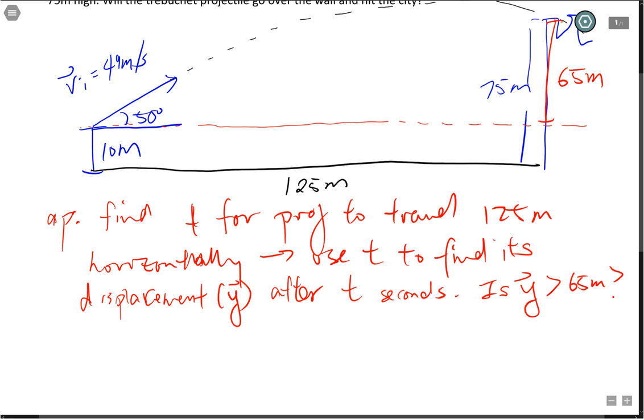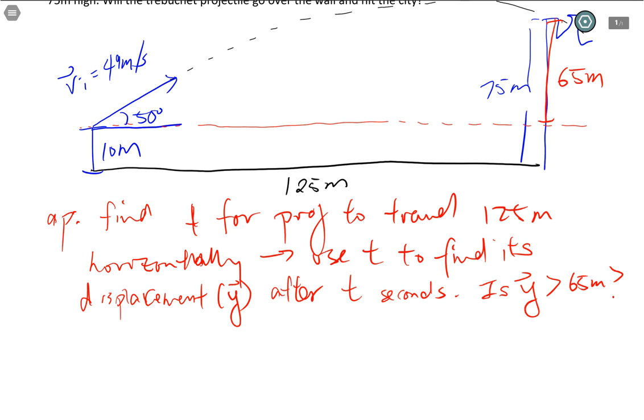Is our displacement going to be greater than 65 meters? If so, it will clear the wall. If not, it will hit the wall and not hit the city. So this will be our approach. Right now is a good time to pause your video, use the approach, do the calculations yourself, and check your answer with mine in the end.